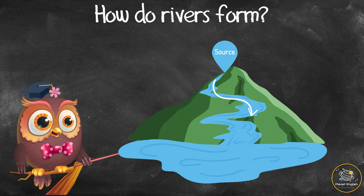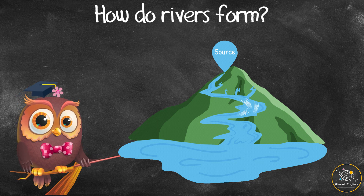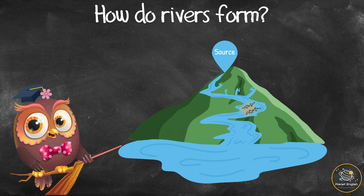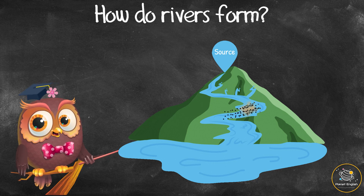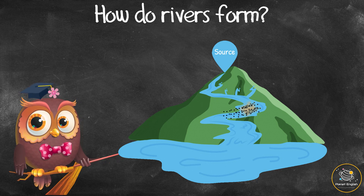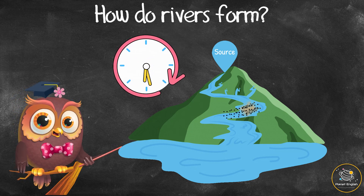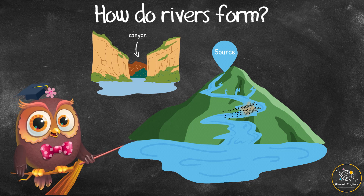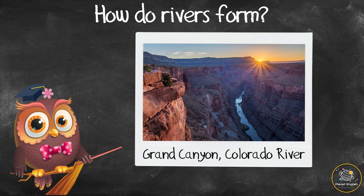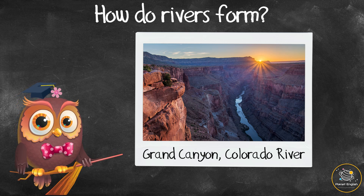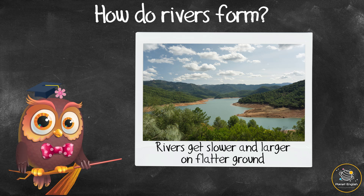As the water runs downhill, it joins other trickles and starts to flow more quickly. The moving water picks up sand and pebbles. This material and the moving water cut through land and wear away rock and soil. Over millions of years, this constant movement of water and material can create canyons and deep valleys, like the Grand Canyon, formed by the Colorado River in the United States.